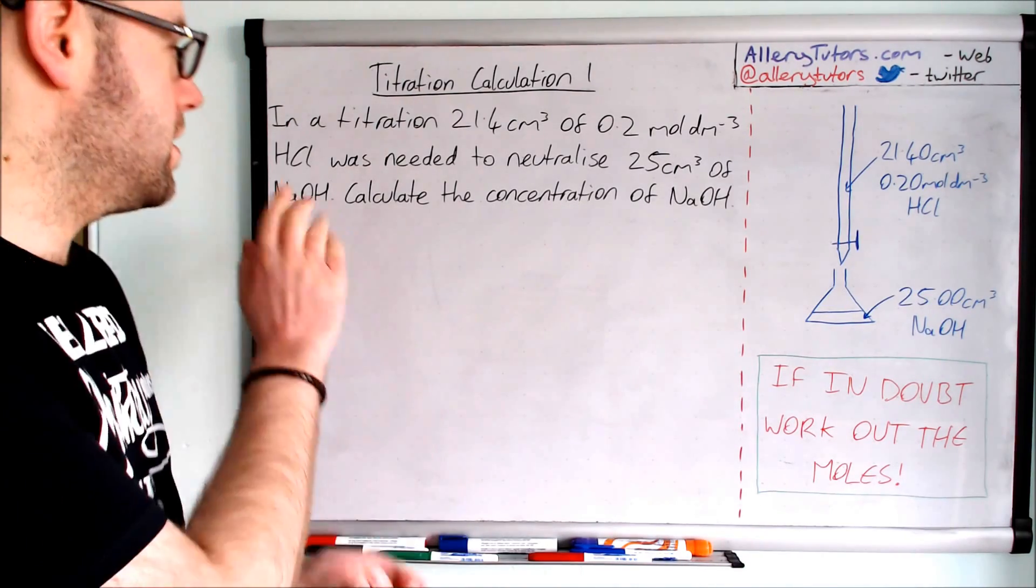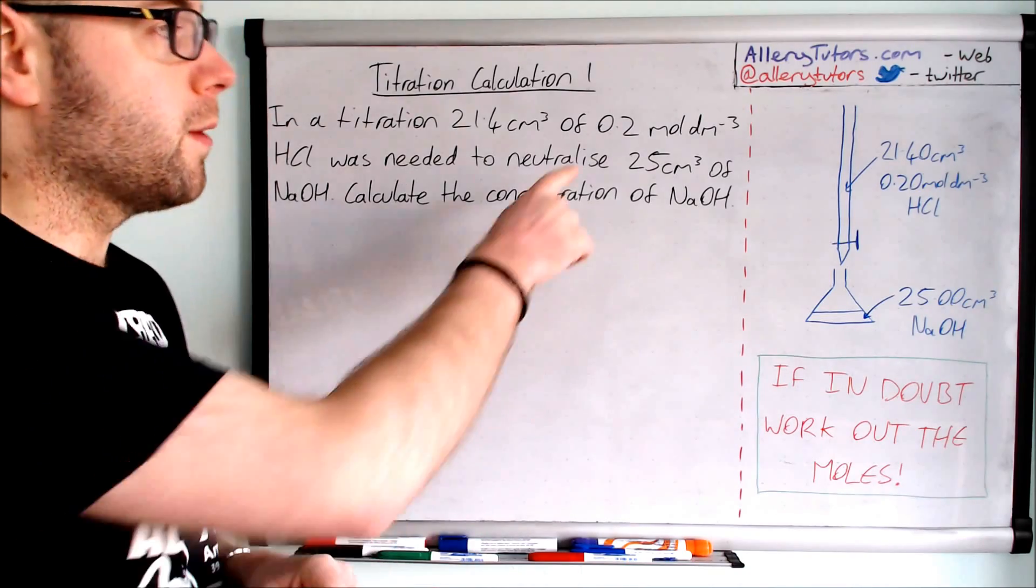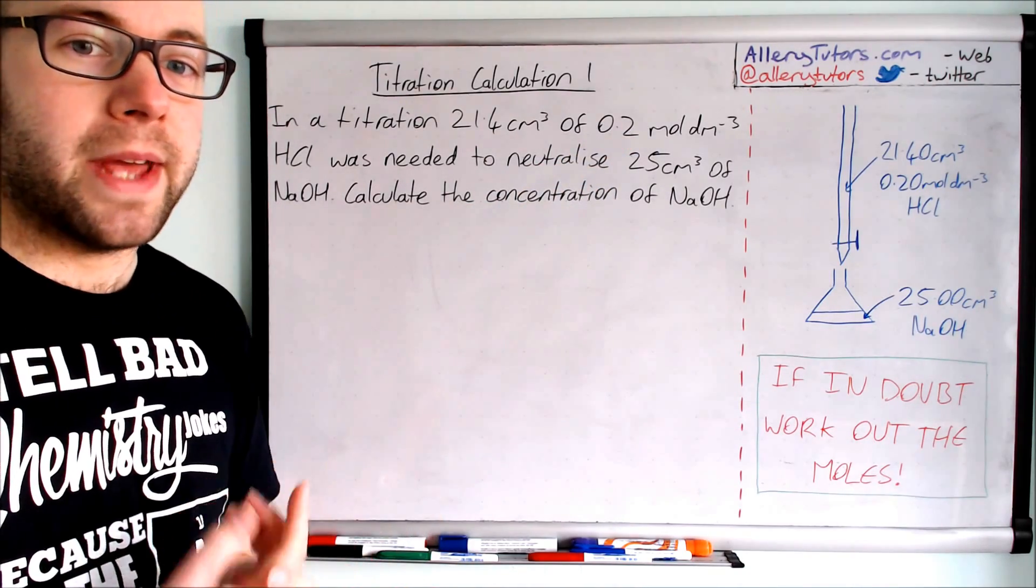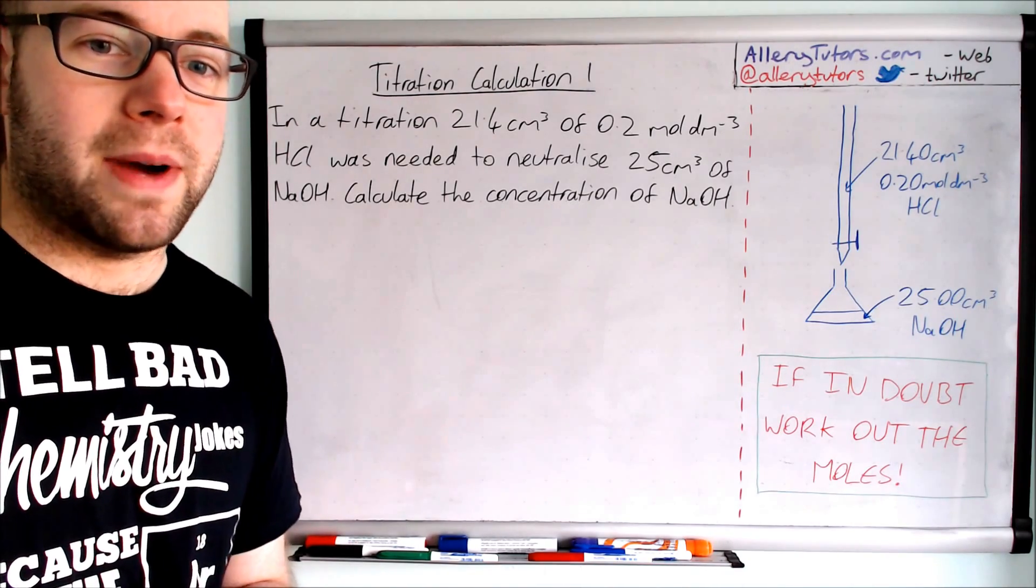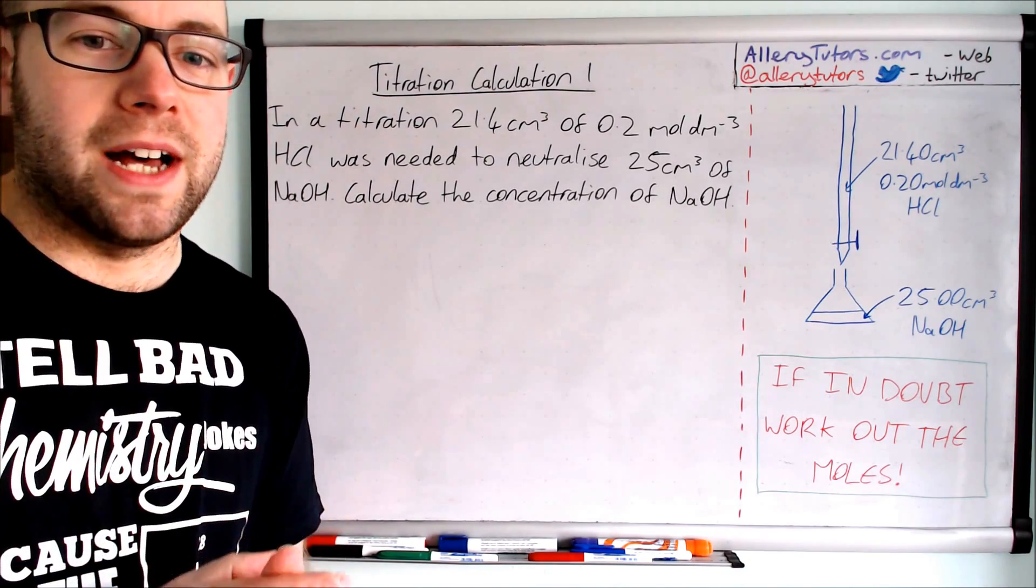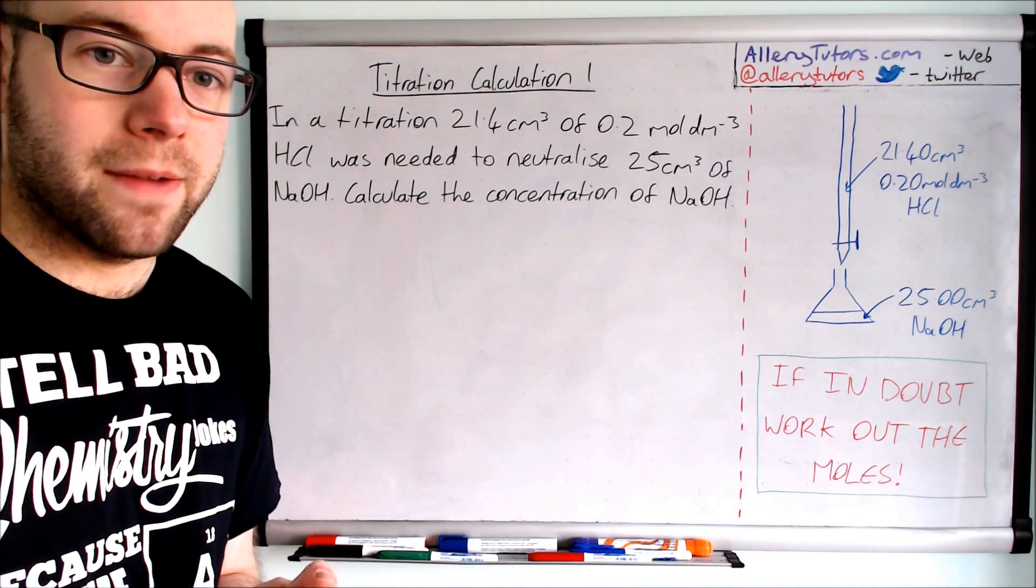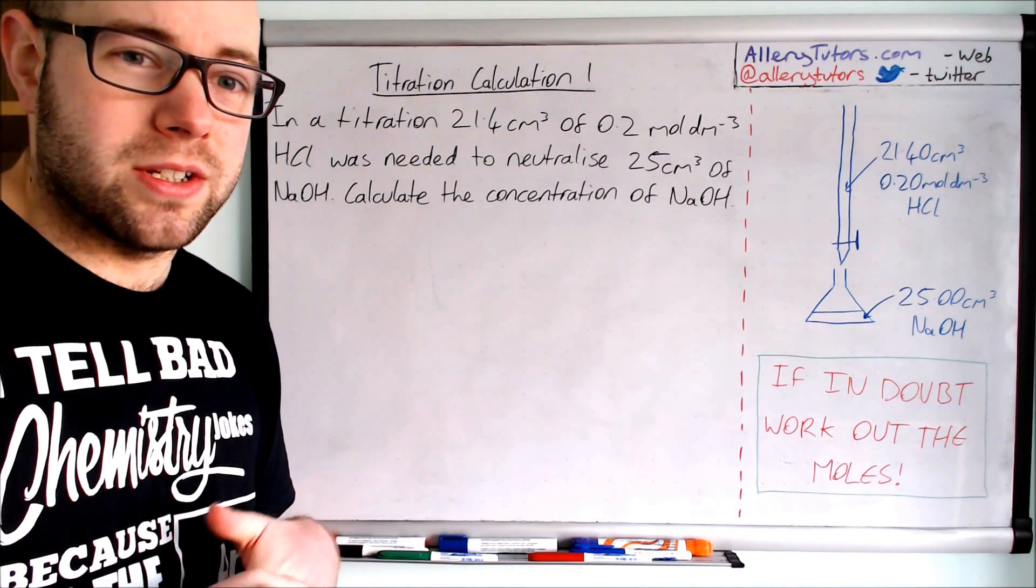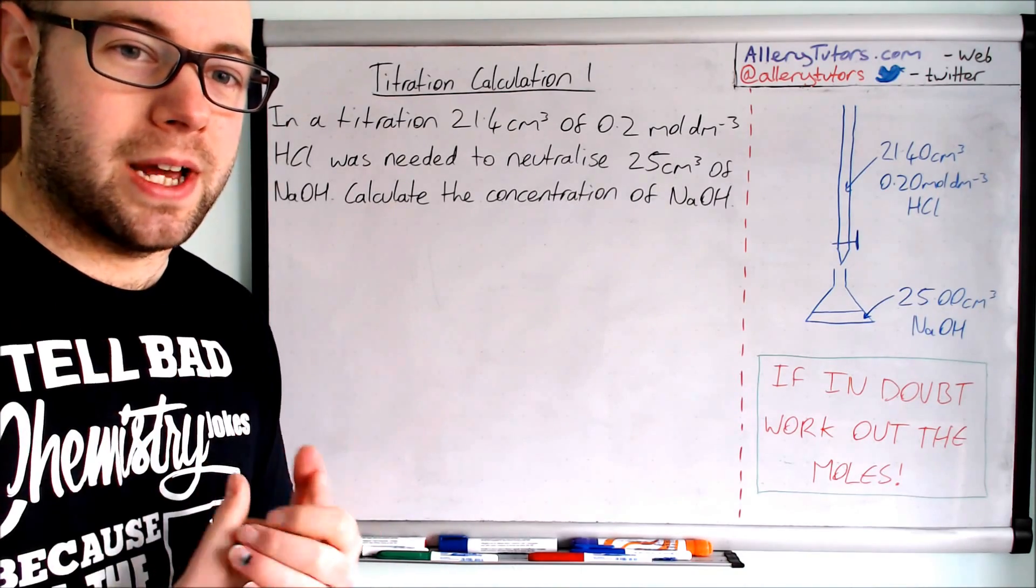So let's crack on. In a titration, 21.4 centimeters cubed of 0.2 moles per dm cubed HCl was needed to neutralize 25 centimeters cubed of sodium hydroxide. We've got to calculate the concentration of sodium hydroxide. I'm going to show you this as a diagram, which sometimes helps to visualize this type of thing.